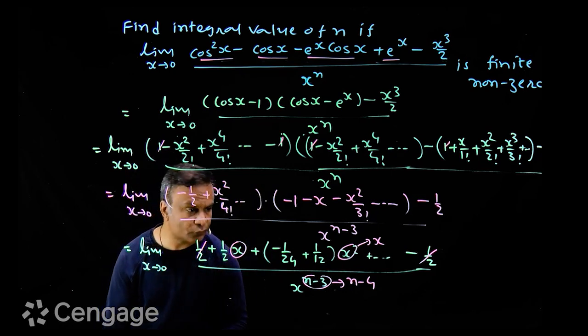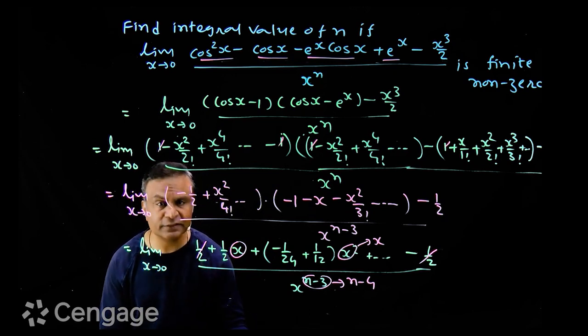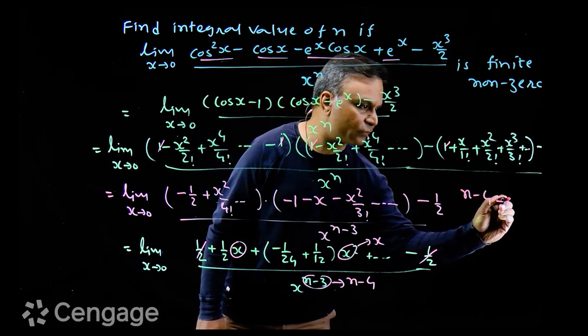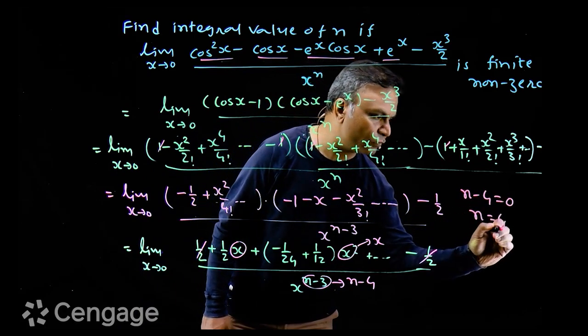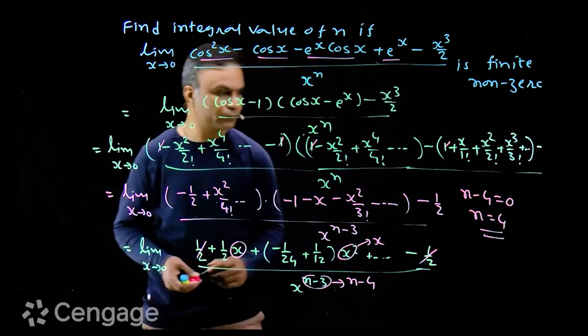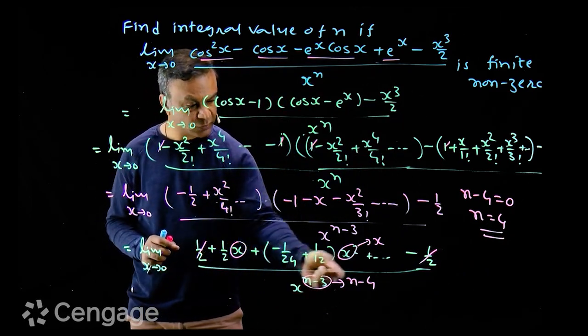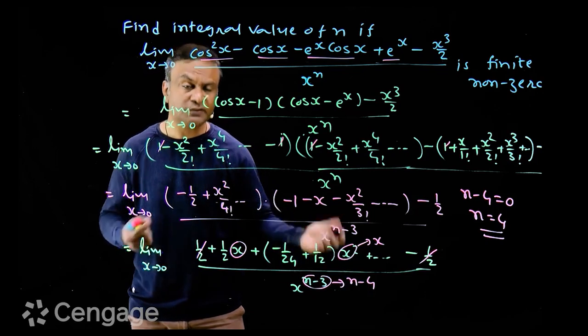So n minus 4 is neither greater than zero nor less than zero. Then definitely n minus 4 is equal to zero. So the value of n is equal to 4. If n is exactly 4, the denominator will be zero power zero, which is equal to 1.